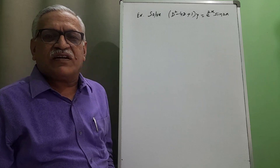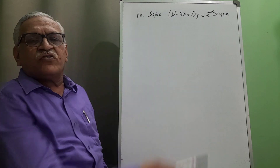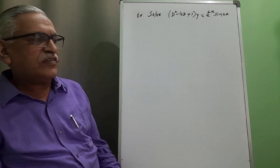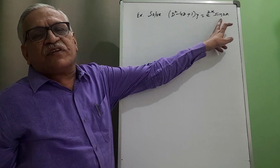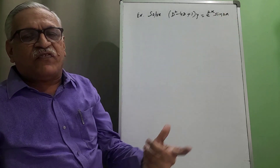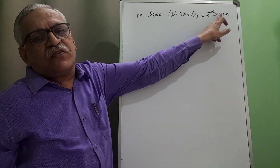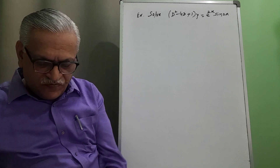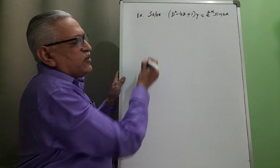Hello friends, myself Rajendra Mahajan presenting one more video on linear differential equation. This is case number five, as it is in the form of e raised to x into capital V, where V is a function of x. Here that function of x is sine 2x, and therefore to obtain its solution, first of all we obtain the complementary function (CF).